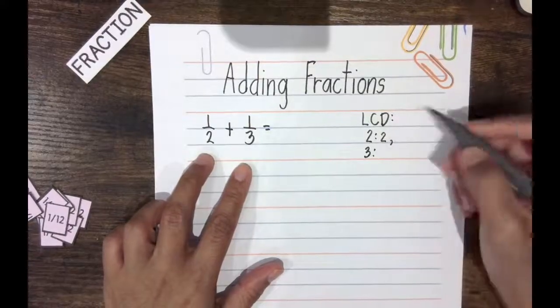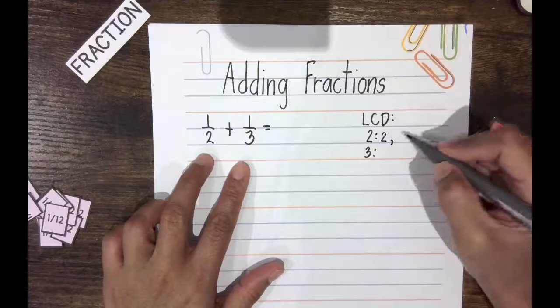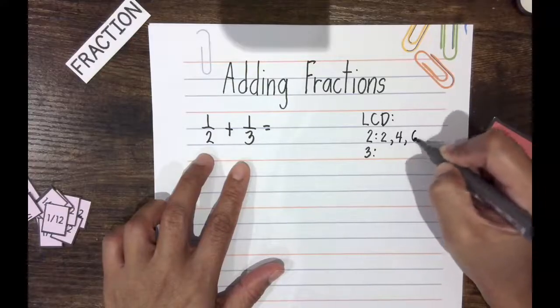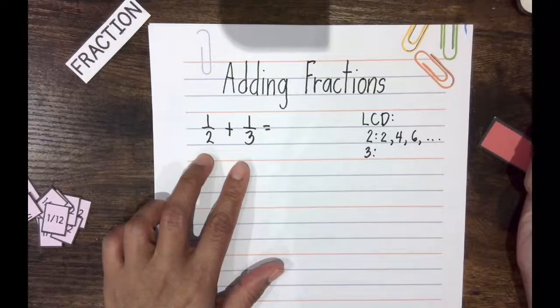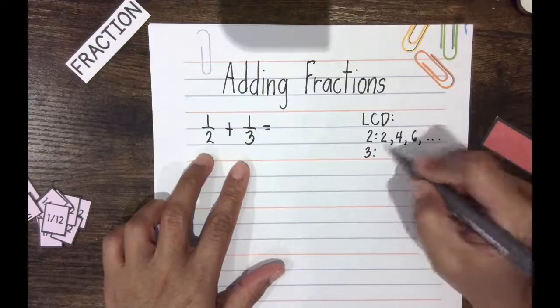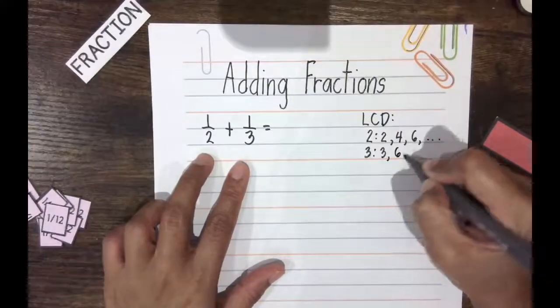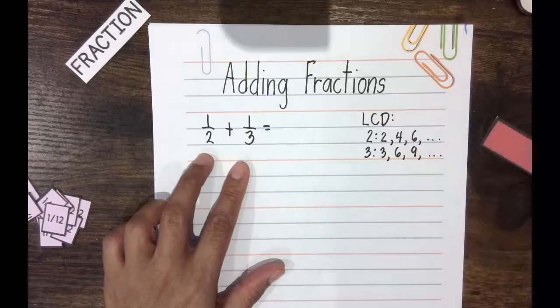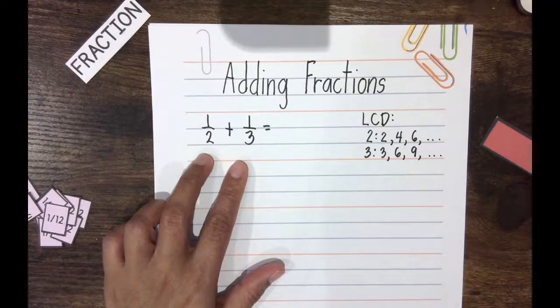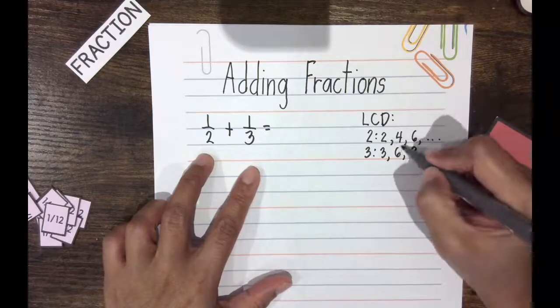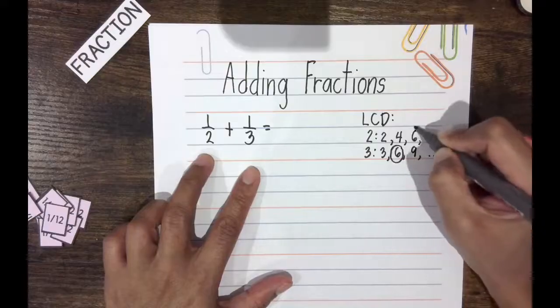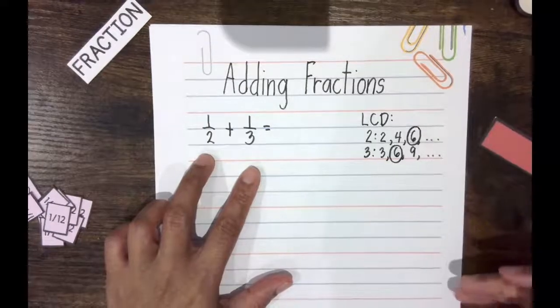You can do that by first listing multiples of 2, which are 2, 4, 6, and so on. Multiples of 3 are 3, 6, 9, and so on. These are numbers that you see when you count by 3's and when you count by 4's. Now notice that the smallest of all the multiples that are common to both numbers is 6.